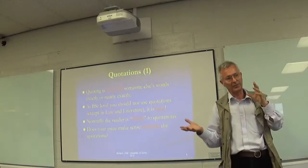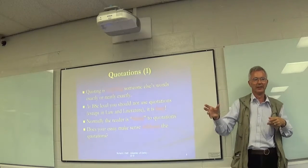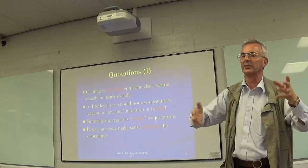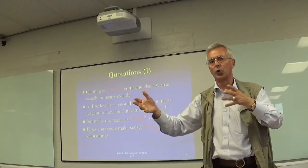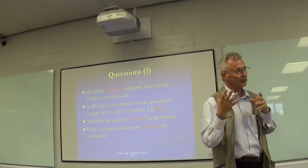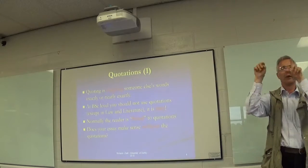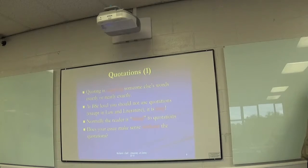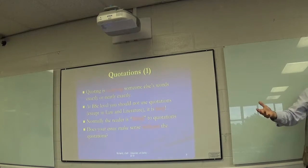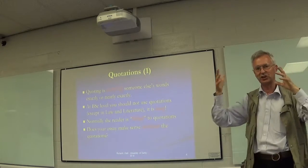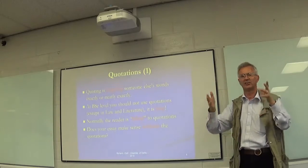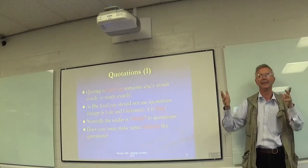The other problem with quoting and citing is that it constrains the way you write and the sequence of your story to the sources. It's just as bad to say 'Blogs, 2013, suggests that, and then Smith, 2014, disproves that' — because the he-says-she-says form of citing constrains your ability to tell your story in your own words.